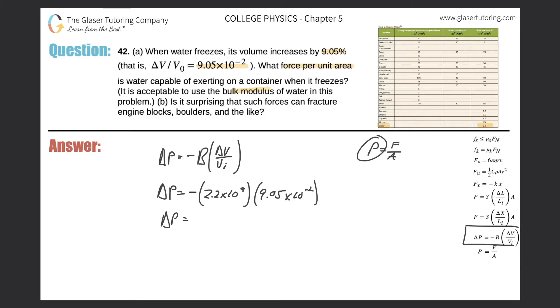So we've got 2.2 times 10 to the 9 times 9.05 times 10 to the minus 2. And wowsers, we get 1.99 times 10 raised to 8 newtons. That is a tremendously large number. That's like 199 million newtons. That's a tremendously large number.